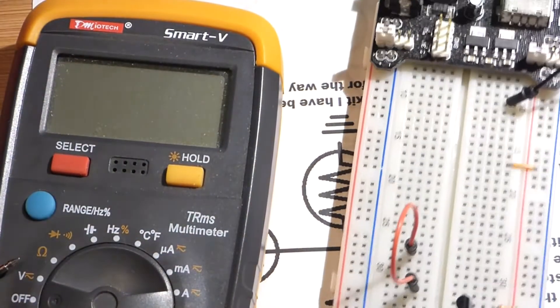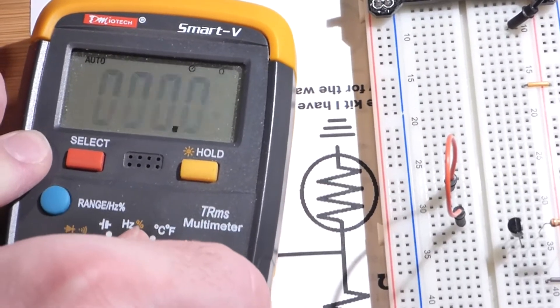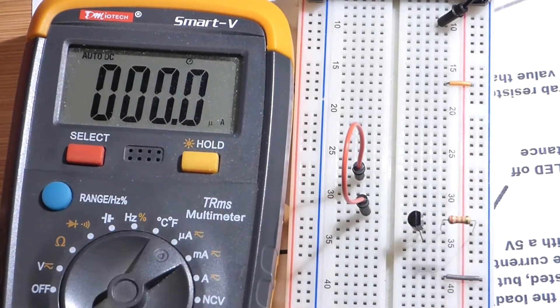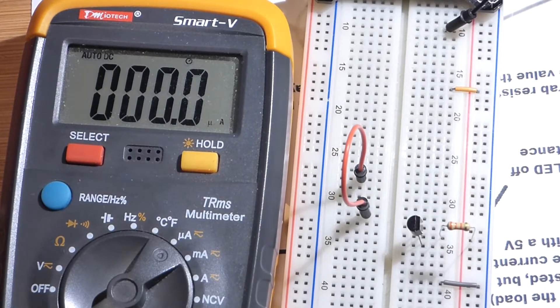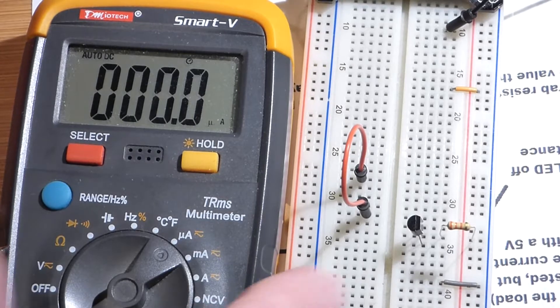We're going to take a current measurement. As I said, this is a 33 kiloohm resistor - 33,000 ohms to the base of the transistor.